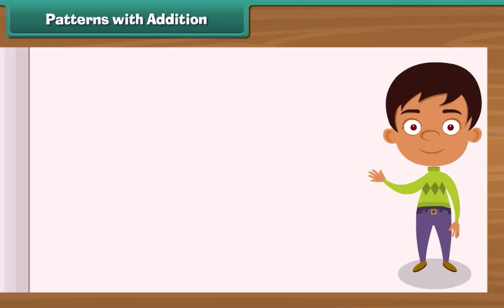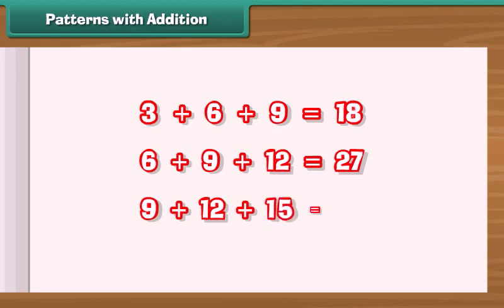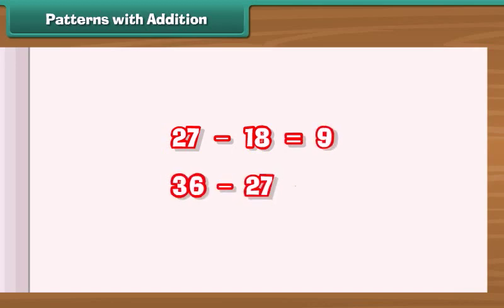Patterns with addition. Look at these sums. There is a pattern in them. Let us find out. 3 plus 6 plus 9 equals 18. 6 plus 9 plus 12 equals 27. 9 plus 12 plus 15 equals 36. We observe that the difference between two adjacent sums is 9. 27 minus 18 equals 9. 36 minus 27 also equals 9.